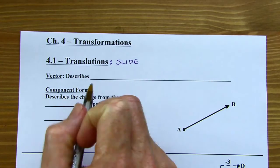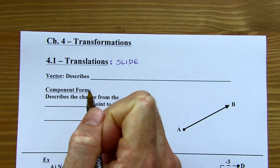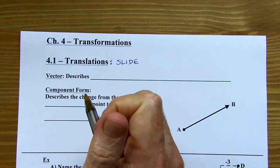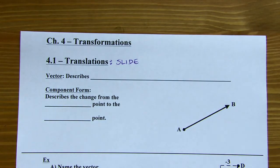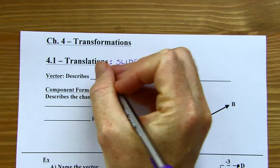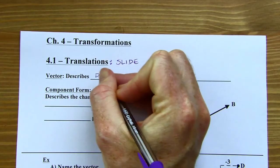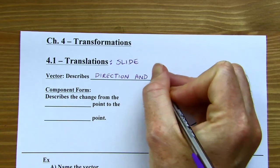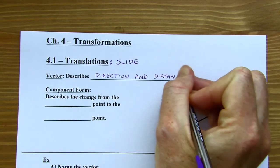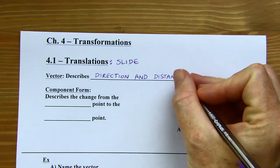Before we get into translations, I'm going to talk about something called a vector. It's similar to a line segment — it kind of looks like a ray, but it's not the same as a ray. It is a line segment, except it describes direction and distance. It has a start and a finish, so it's very similar to a directed line segment.